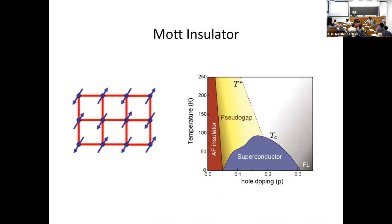Let's start with some basics about Mott insulators. As we all know, it's a prime example of a strongly correlated electron system. When there's a strong on-site repulsion at the filling of one electron per site, band theory would say the system has to be a metal, but repulsion makes it into an insulator. At every site there's only a single electron and the spins can do interesting things, but as far as charge degrees are concerned this is a very simple state.